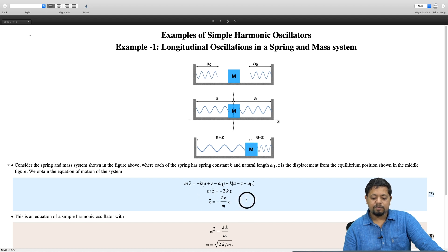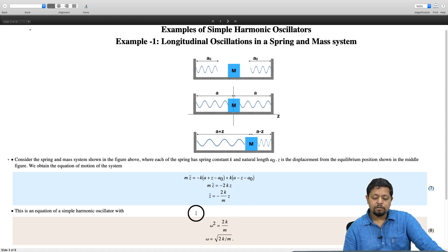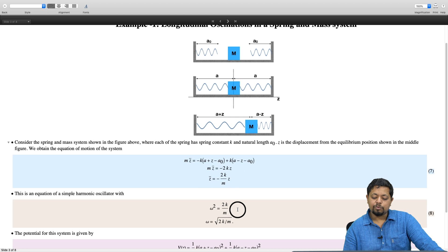Now, this equation is in the form of a simple harmonic oscillator if omega square is 2k over m. We realize that this system does satisfy the equation for a simple harmonic oscillator and its frequency omega squared is given by 2k over m. So omega is square root 2k over m.